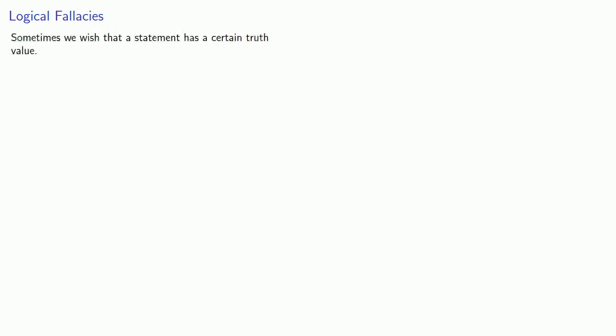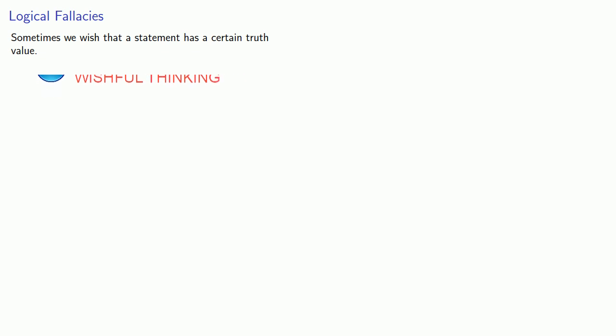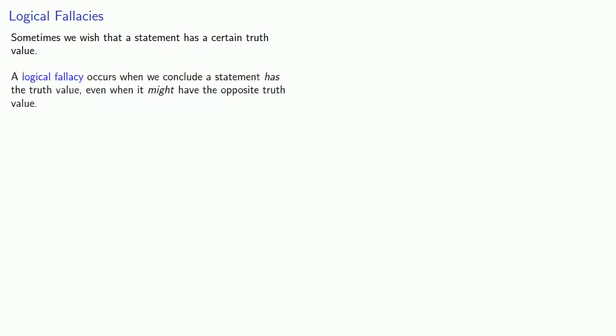In addition to being able to use the rules of inference, it's almost as important to be able to identify logical fallacies. These occur as follows: sometimes we wish that a statement has a certain truth value, and a logical fallacy occurs when we conclude a statement has that truth value even when it might have the opposite truth value.